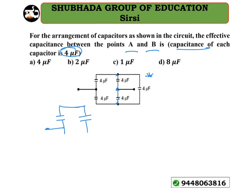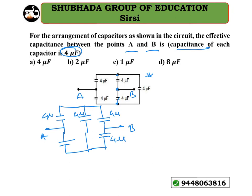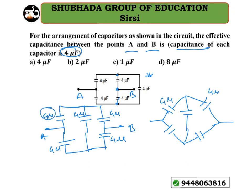Rearranging the capacitors: suppose we have 4μF and 4μF on one side, and flipping the middle branch to the right — with point A and point B marked — each branch is 4μF, 4μF, 4μF, 4μF, and 4μF in the middle. This is clearly of the form of a Wheatstone bridge. Since 4/4 = 4/4, the bridge is balanced.